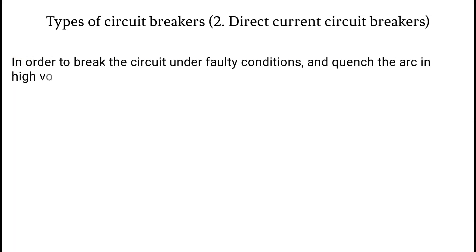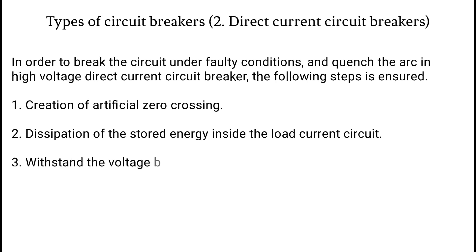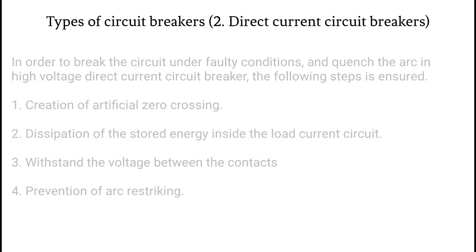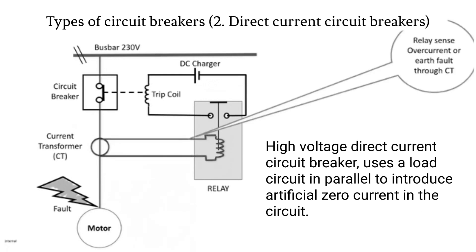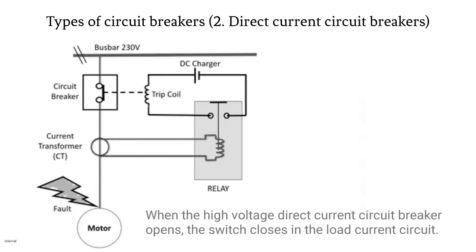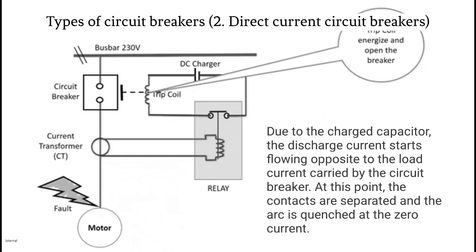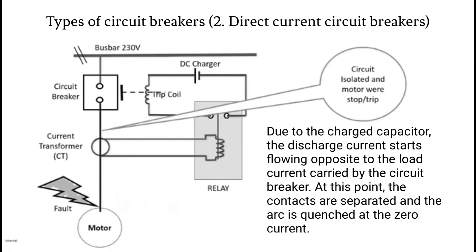In order to break the circuit under faulty conditions and quench the arc in a high voltage direct current circuit breaker, the following steps are ensured: 1. Creation of artificial zero crossing. 2. Dissipation of the stored energy inside the load current circuit. 3. Withstand the voltage between the contacts. 4. Prevention of arc restriking. High voltage direct current circuit breaker uses a load circuit in parallel to introduce artificial zero current in the circuit. When the HVDC circuit breaker opens, the switch closes in the load current circuit. Due to the charged capacitor, the discharge current starts flowing opposite to the load current carried by the circuit breaker. At this point, the contacts are separated and the arc is quenched at zero current.